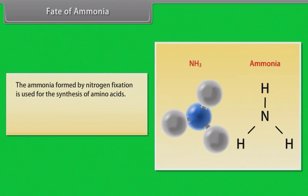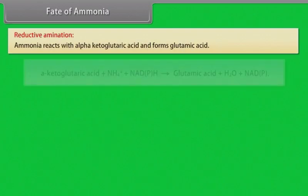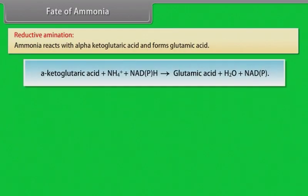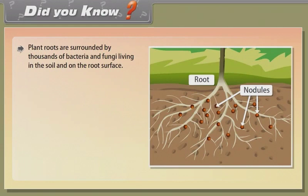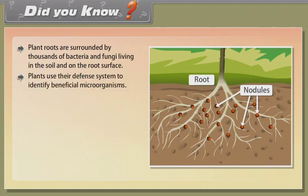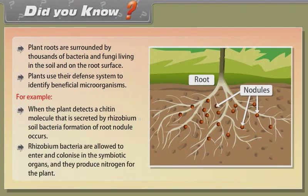Fate of ammonia: the ammonia formed by nitrogen fixation is used for the synthesis of amino acids. There are two processes by which amino acids are synthesized. Reductive amination: ammonia reacts with alpha-ketoglutaric acid and forms glutamic acid. Transamination: in this process, the amino group is transferred from one amino acid to the keto group of a keto acid. Did you know? Plant roots are surrounded by thousands of bacteria and fungi. Plants use their defense system to identify beneficial microorganisms. When the plant detects a chitin molecule secreted by Rhizobium soil bacteria, formation of root nodules occurs, and rhizobium bacteria are allowed to enter and colonize in the symbiotic organs, producing nitrogen for the plant.